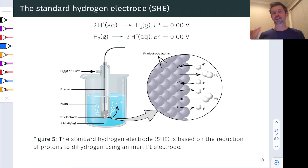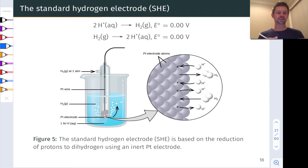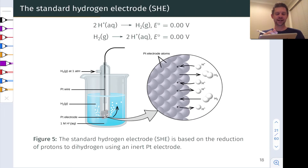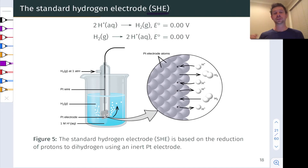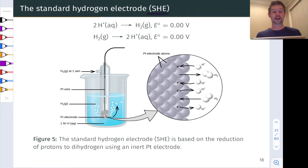Our standard anode that we use to measure reduction potentials — standard reduction potentials — is known as the standard hydrogen electrode, or as I like to call it, the SHE, standard hydrogen electrode.